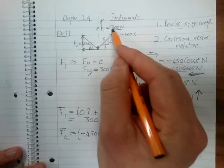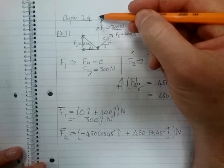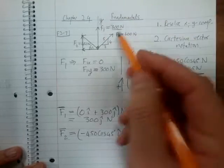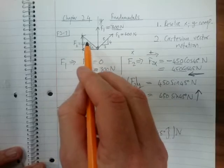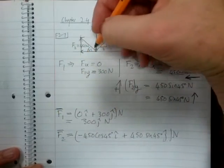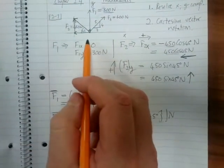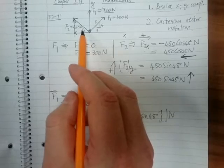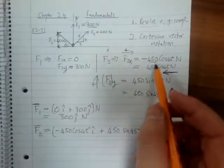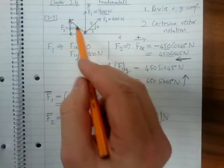Similarly F2, the magnitude is 450, that's the magnitude of this force. But then if we want to obtain the scalar components we carry out these calculations, and then if we want to represent this force as a Cartesian vector then we write it in this form.